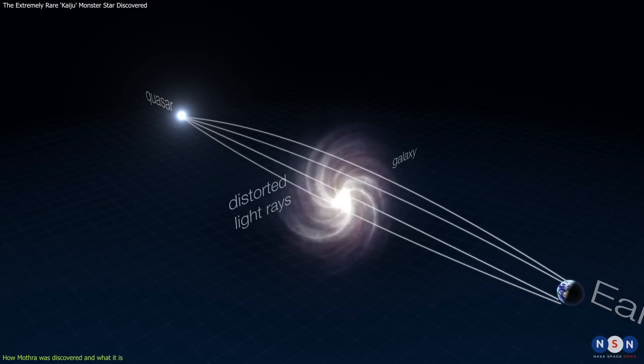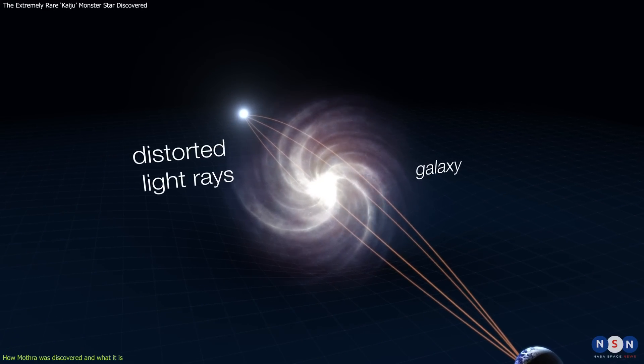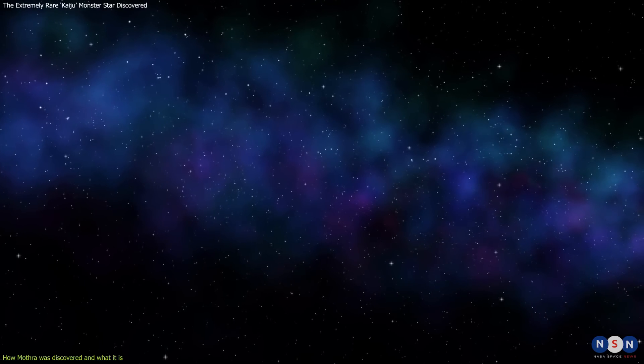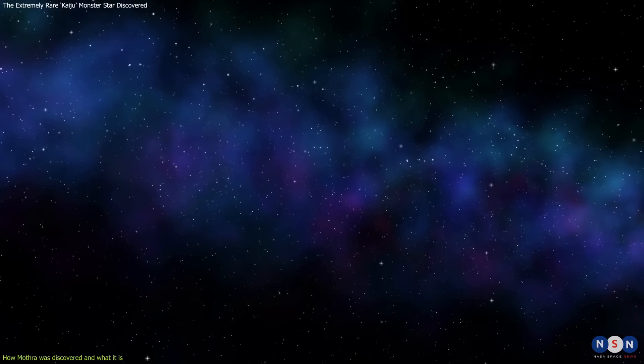This phenomenon is called gravitational lensing, and it was predicted by Albert Einstein's theory of general relativity. Gravitational lensing is one of the ways that astronomers can study dark matter, which is a mysterious substance that makes up most of the matter in the universe but cannot be seen directly.